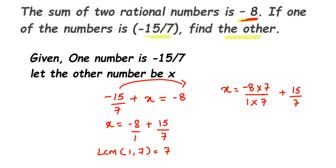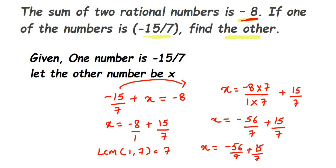So x = (-8 × 7)/7 + 15/7 = -56/7 + 15/7. Now the denominators are the same, so we combine the numerators. Since the signs are different — one negative, one positive — we subtract: 56 - 15 = 41, and the sign is negative. So x = -41/7. Therefore, the other number is -41/7.